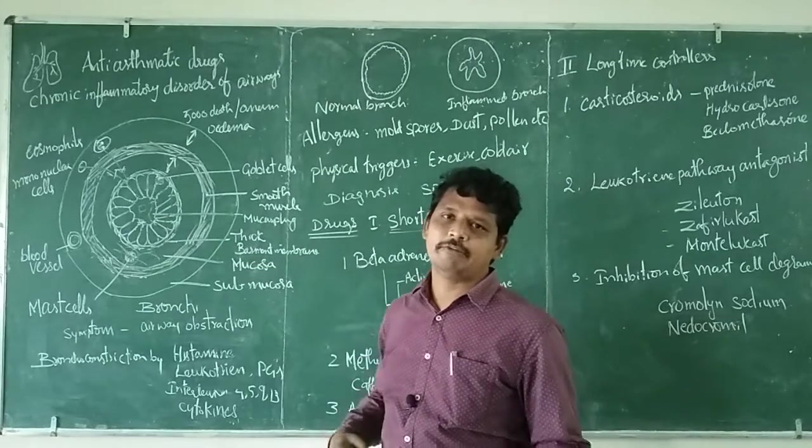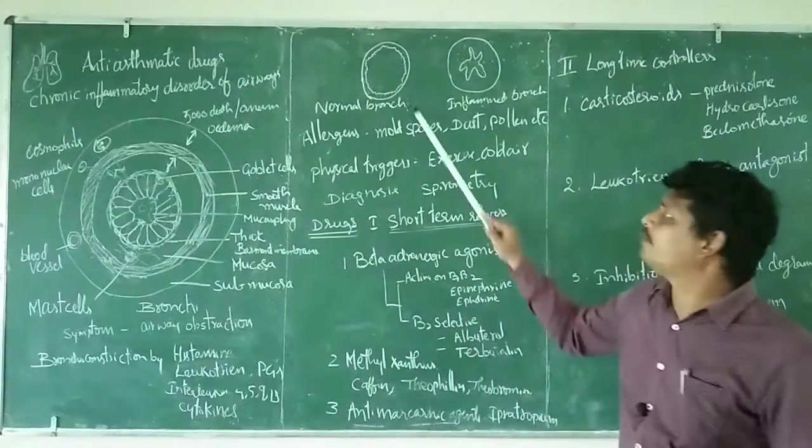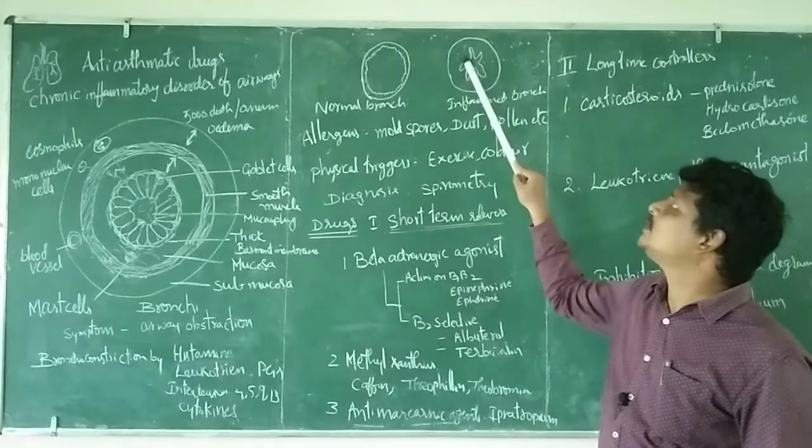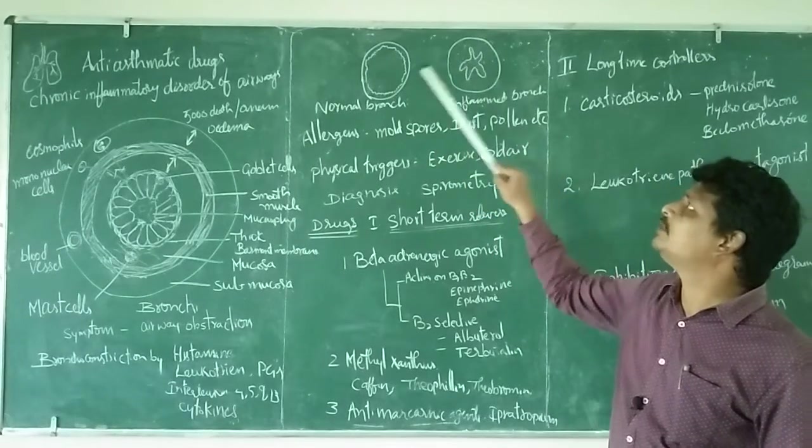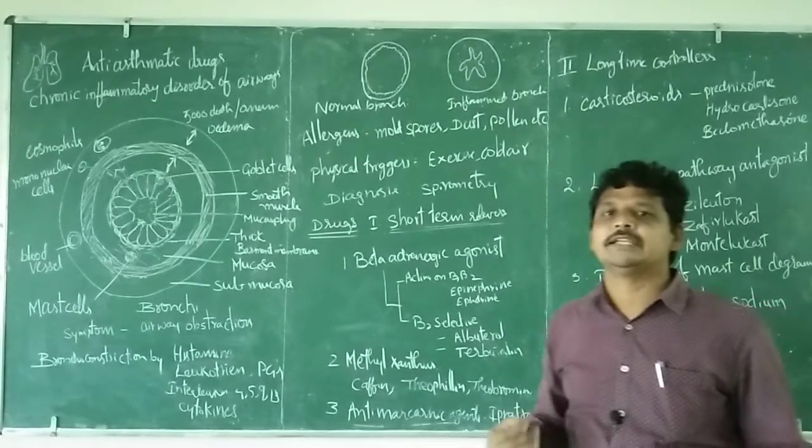You can see this here: this is the normal bronchi, and because of the stimuli, there will be shrinkage of this airway that makes the patient difficult in breathing. That is the main problem with asthma.